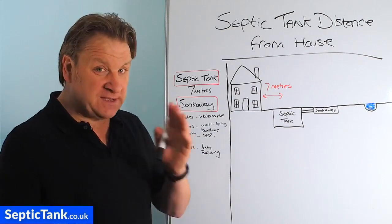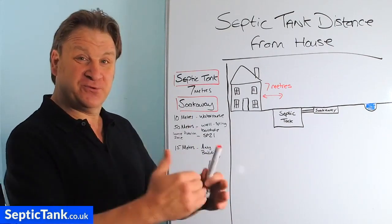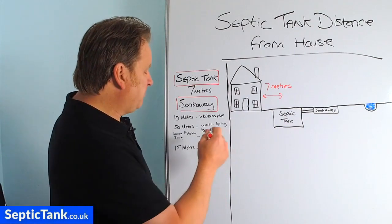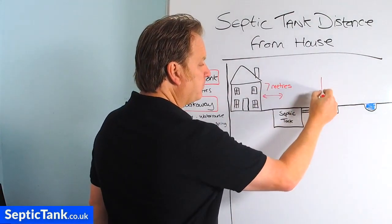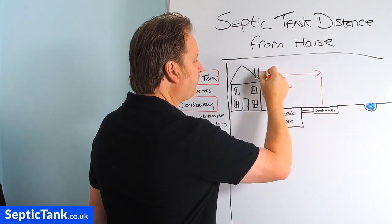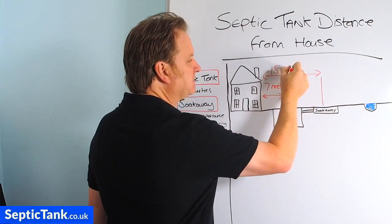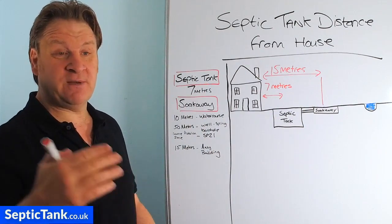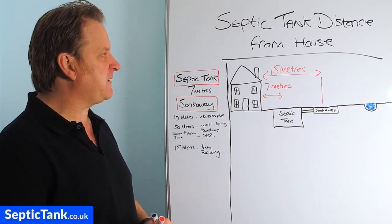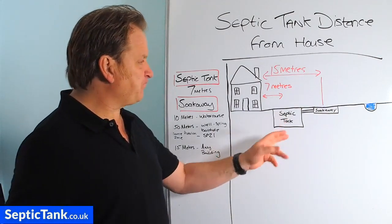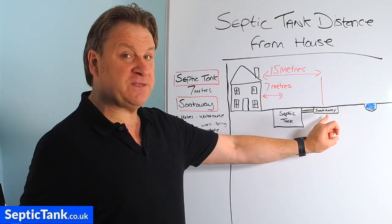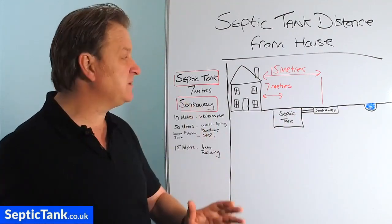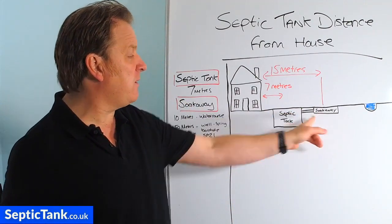So now what about the soakaway? Well, that's got a few more rules and regulations attached to it. How far does a soakaway need to be from a building? Building regs states that the soakaway needs to be at least 15 meters from any building, which is about 45 feet — whether that's your building, your neighbor's building, an outbuilding, anything like that. It doesn't really matter how far the soakaway is from the septic tank; we're only talking about how far the septic tank and soakaway are from any building.